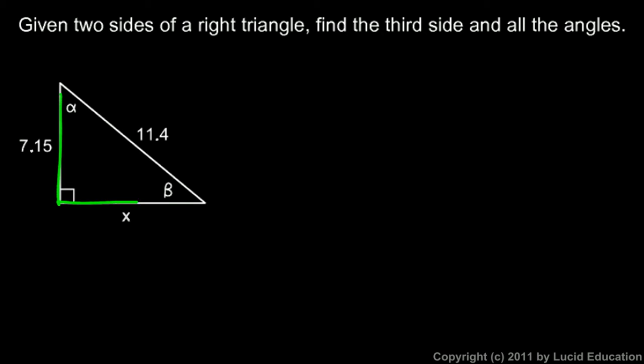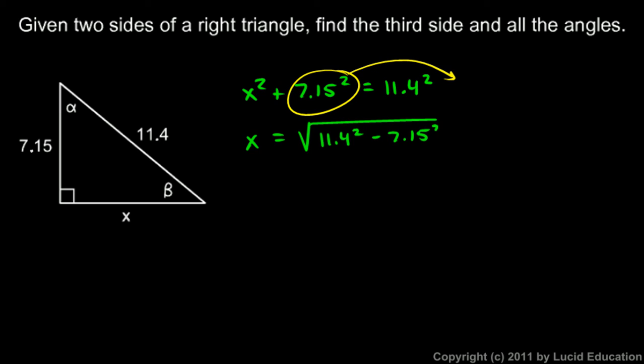We know that this squared plus this squared is 11.4 squared. So let's write that. And this side is just x. I'll write x squared plus 7.15 squared is equal to 11.4 squared. So solving that for x, I'm going to take the 7.15 squared and put it over here. And then x will be the square root of 11.4 squared minus 7.15 squared.